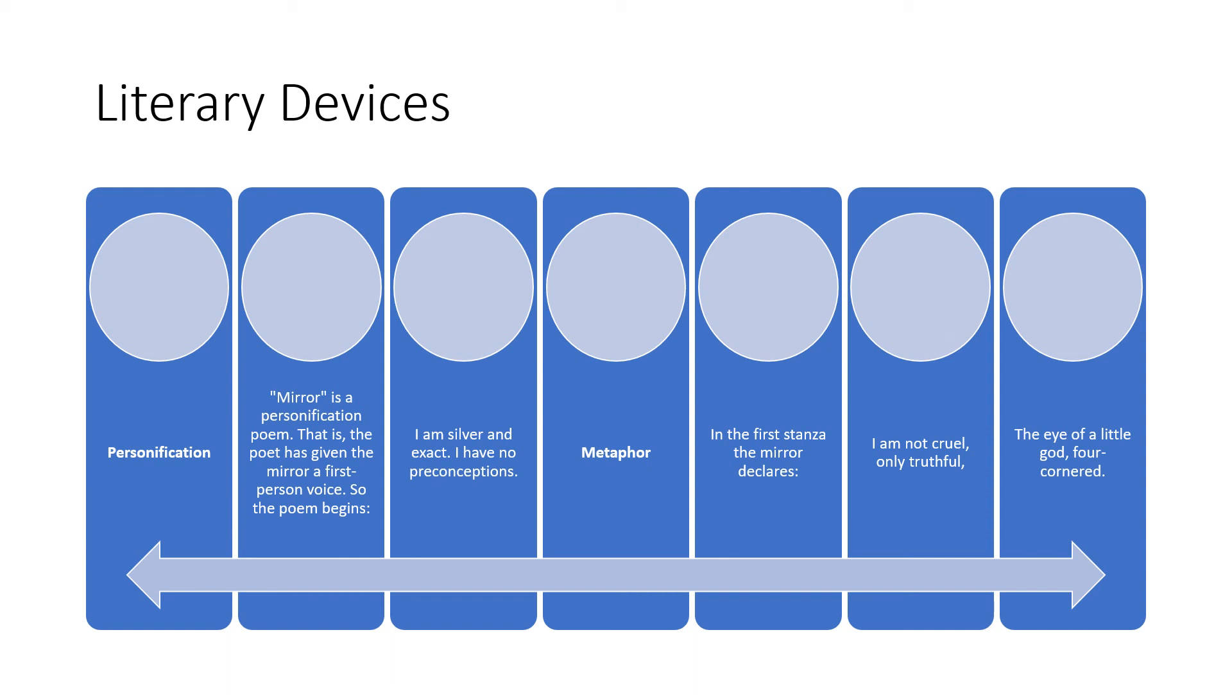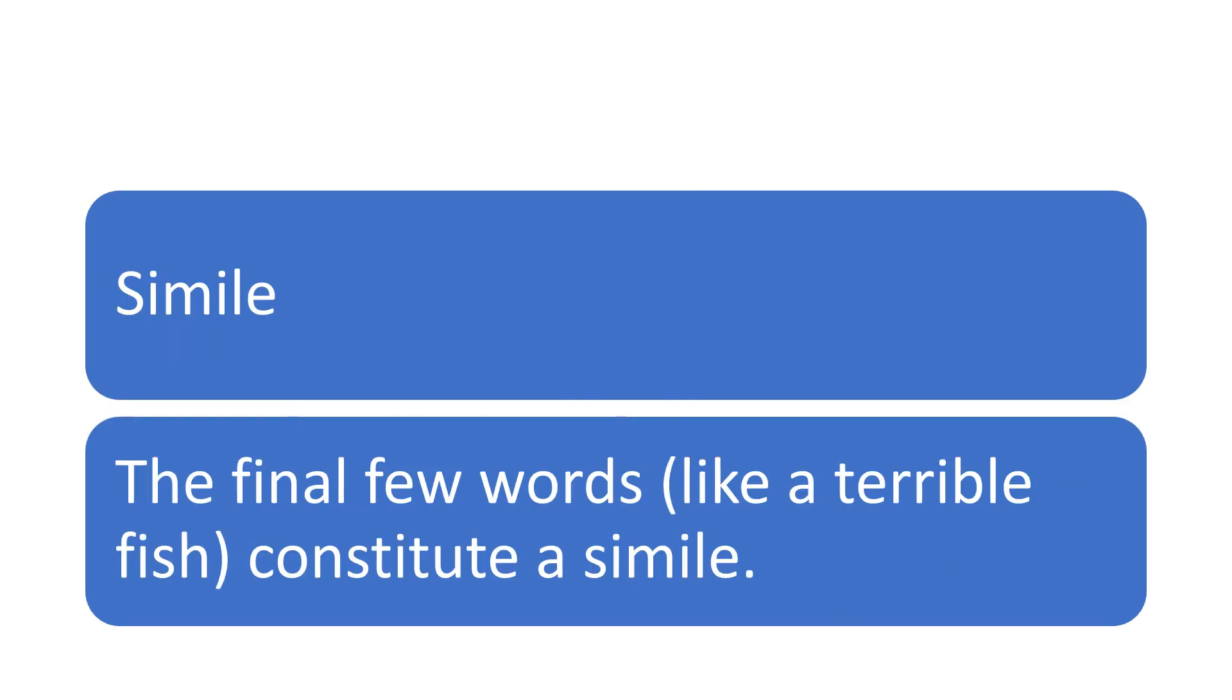The metaphor in the poem is in the first stanza. When the mirror declares, I am not cruel, I am only truthful, the eye of a little god, four cornered. And so the mirror becomes the eye of a little god. And metaphorically speaking here, at the start of the second stanza, Now I am a lake, the metaphor comes in again, as the mirror becomes a deep, reflective water where the woman is absorbed, immersed, in thinking about what has gone before and what is yet to come perhaps. Similarly, in the final few words of the poem, like a terrible fish, constitutes a simile.